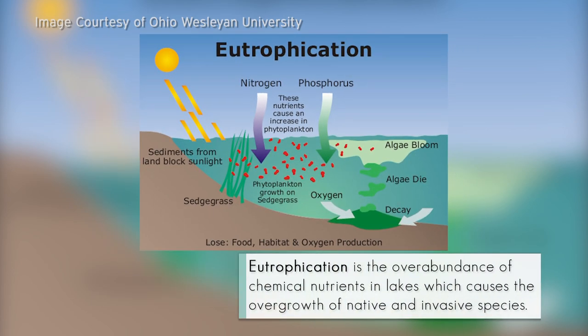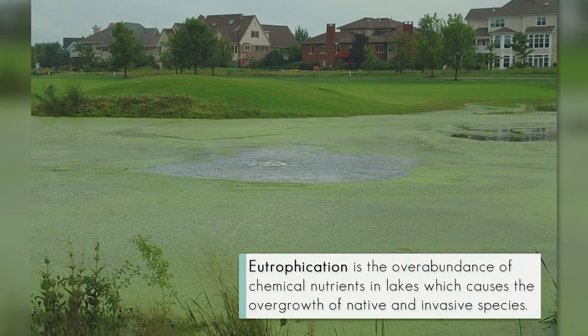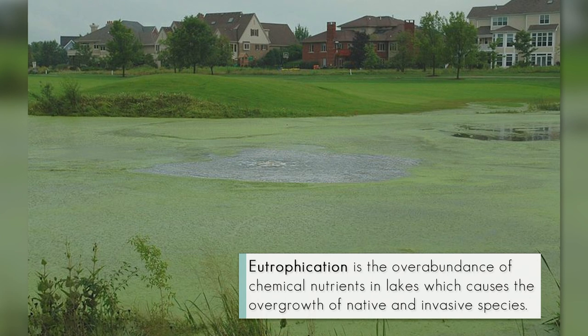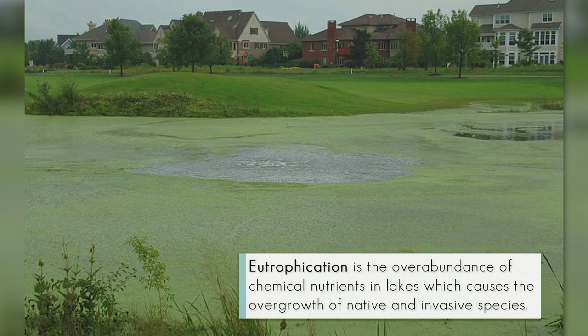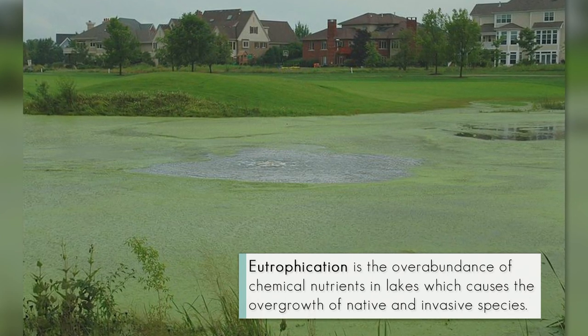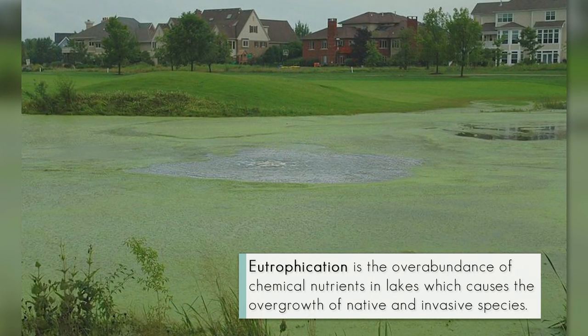The normal lake has very few weeds in it and supports a great fish population. A eutrophic lake is a lake that's changing with ever-increasing growth of weeds, and these weeds can be both native and invasives.